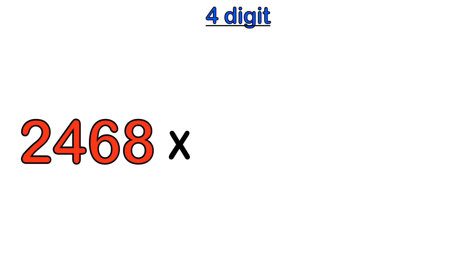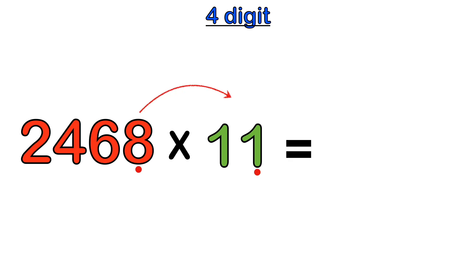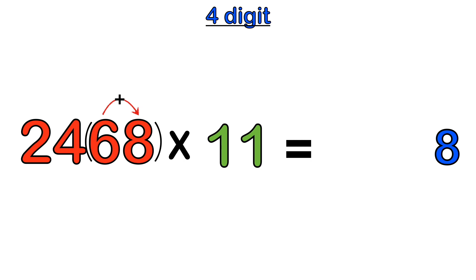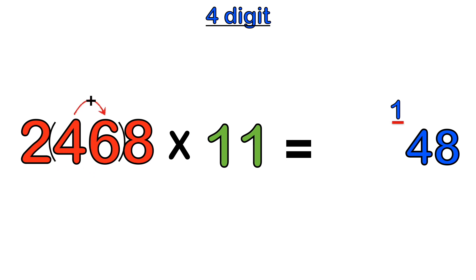Let's take a look at four digits — 2,468 multiplied by 11. We start with the last digit, eight, and multiply it by the last one in 11: eight times one equals eight. We move one space to the left and add the two adjacent numbers: six plus eight is 14. We put that in the answer line, carrying the one. Then we move one space to the left — four plus six equals 10, and adding the carried one gives us 11, carrying the one again.